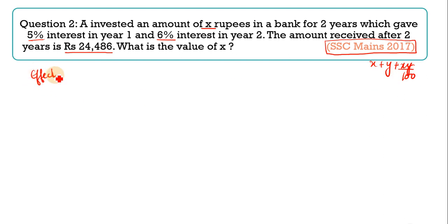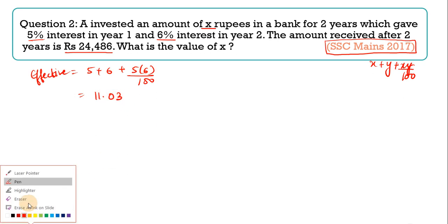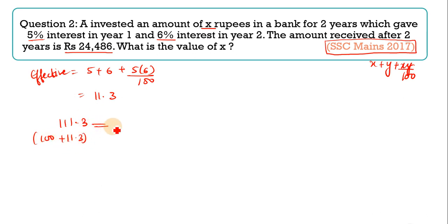See, till now what we studied, in that both years' rates were the same. Here the rates are different. So we will use which formula? Our effective rate of interest formula, that is x plus y plus xy upon 100. We will use this formula. So our effective rate will come from here. So let's quickly find the effective rate. That is 5 plus 6 plus 5 into 6 upon 100. 5 plus 6 will give you 11, and here 30 becomes 0.3. So that is 11.3.